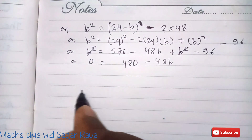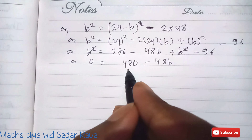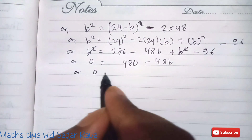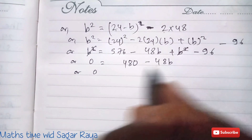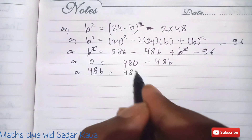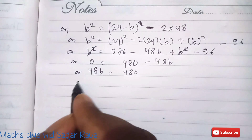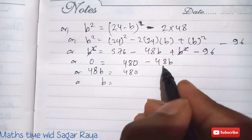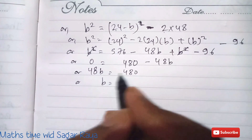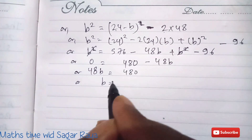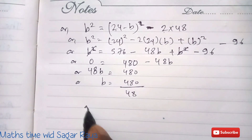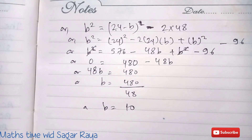Bringing −48b to the other side: 48b = 480. Therefore b = 480 ÷ 48, so b = 10.